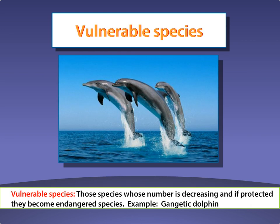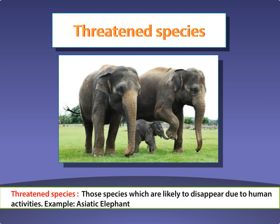Vulnerable species. Those species whose number is decreasing and if not protected, they can become endangered species are known as vulnerable species. Example: Asiatic elephant.